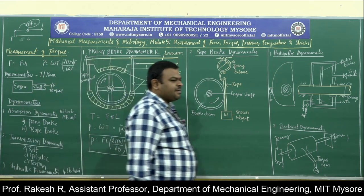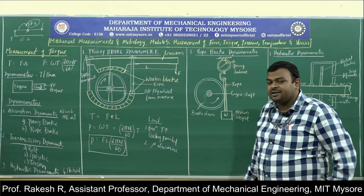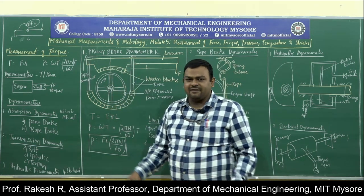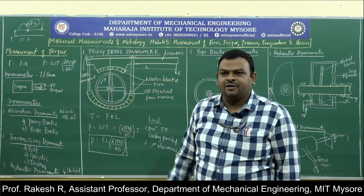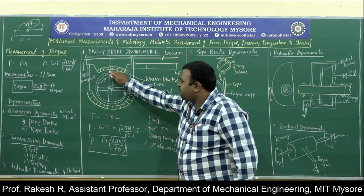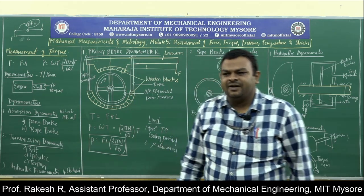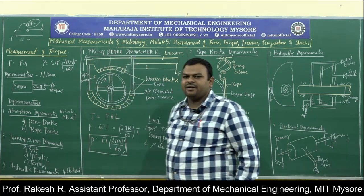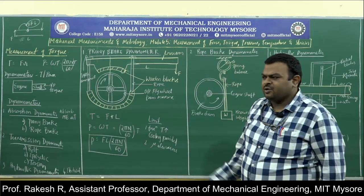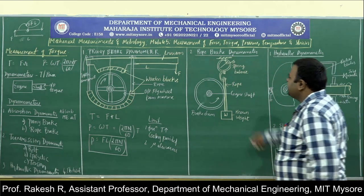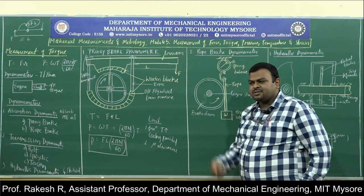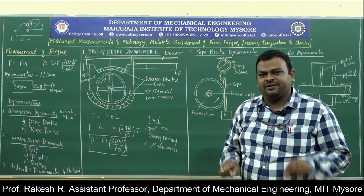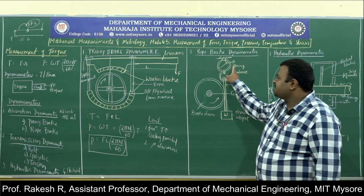Now let us see the rope brake dynamometer. In the Prony brake, wear and tear damages wooden blocks and the shaft perimeter. Adding a pressure plate increases cost. To avoid this, a rope brake arrangement is used. The same principle applies — whenever a brake is used in the measuring system, torque is measured via friction, absorbing mechanical energy.